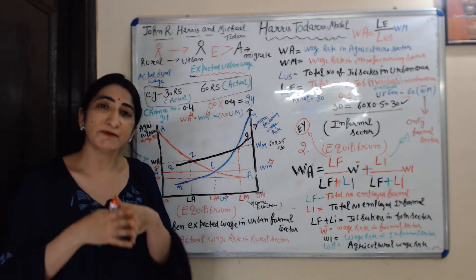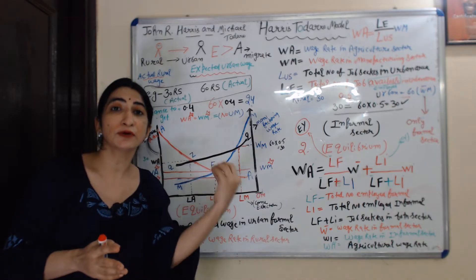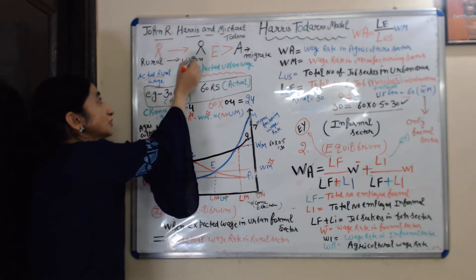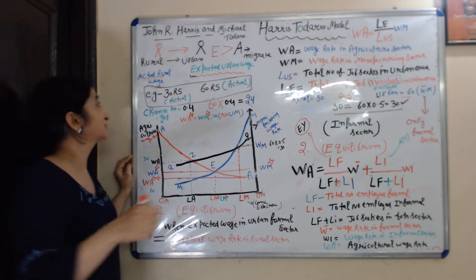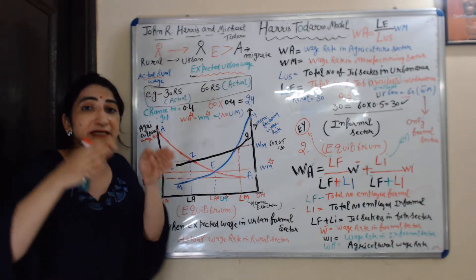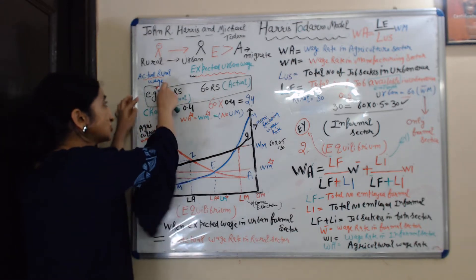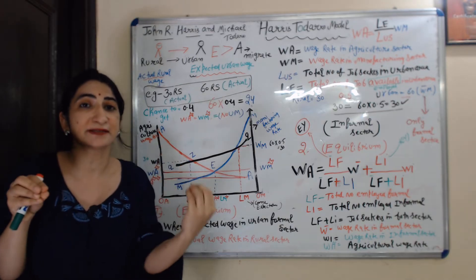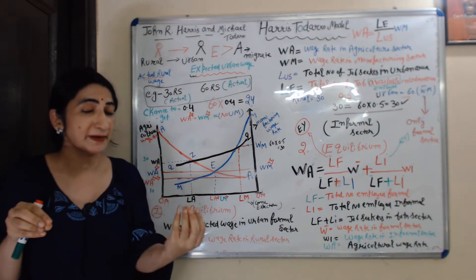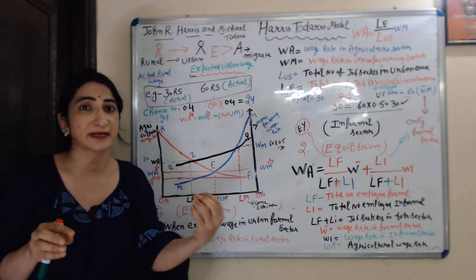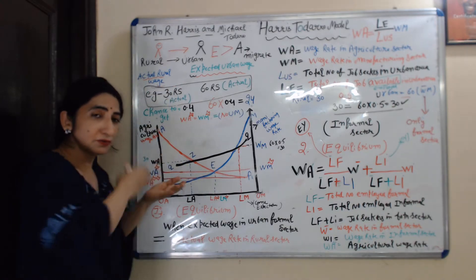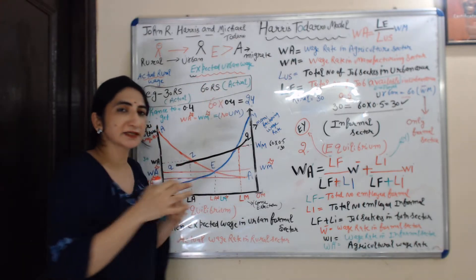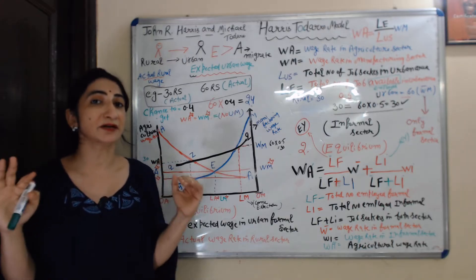According to this model, when a person is going to migrate from rural area to urban area, he makes a comparison between actual rural wage rate and expected urban wage rate. Please keep in mind that expected wage rate is different from actual wage rate. If he finds expected urban wage rate is more than actual rural wage rate, then he will migrate, otherwise not.